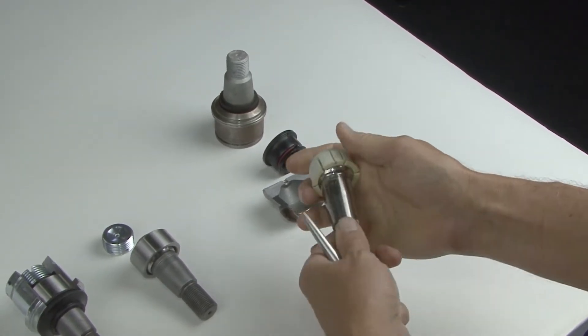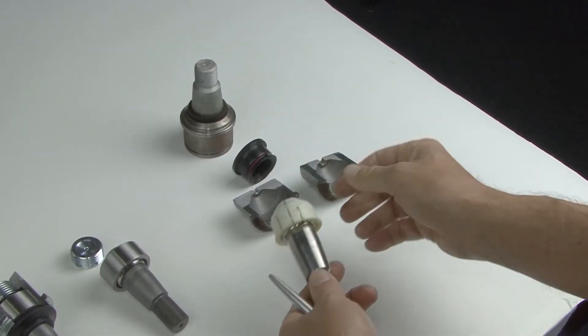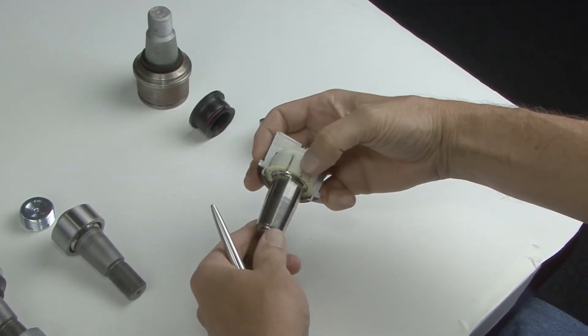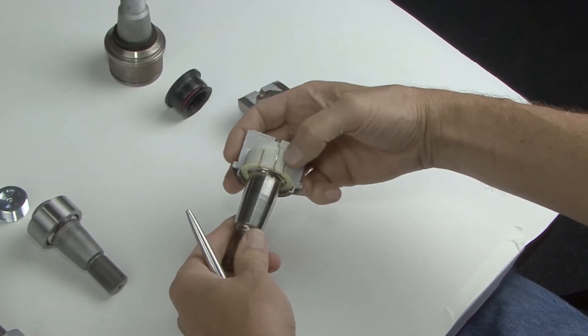They are contained in this housing which we've cut open so that we could take this apart. We cut this open so you could see the inner workings. You can't take these apart normally.